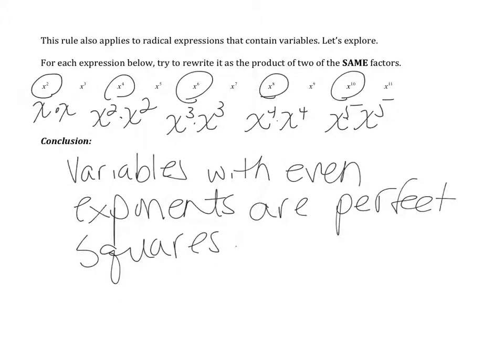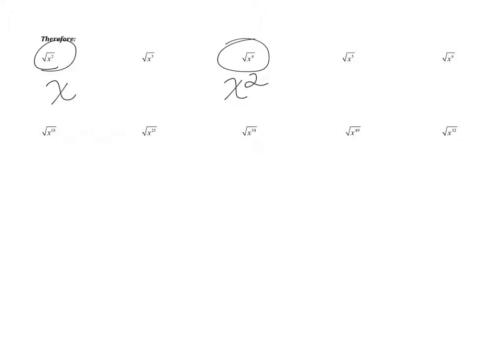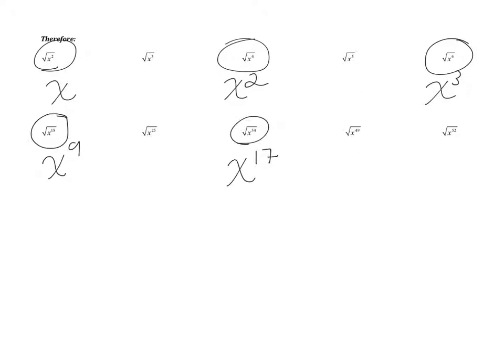So that takes us into the next set of problems. Looking at the first row, the square root of x squared is just x because x times x is x squared. The square root of x to the fourth is x to the second, because x squared times x squared is x to the fourth. The square root of x to the sixth is x to the third. In the next row, for even exponents we're just dividing the exponent by 2. So the square root of x to the 18th gives us x to the 9th. X to the 34th gives us x to the 17th. X to the 52nd — half of 52 is 26 — gives us x to the 26th.